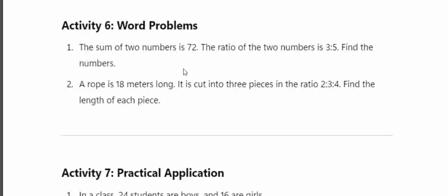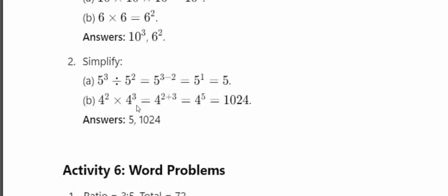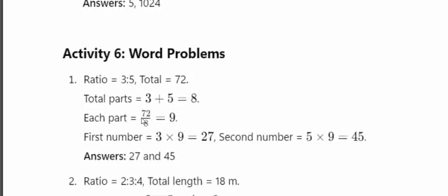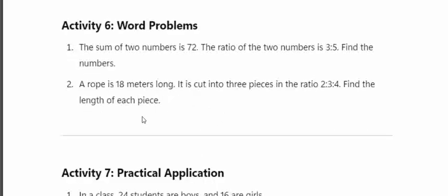The sum of two numbers is 72. The ratio of the two numbers is 3 is to 5. Find the numbers. Total ratio parts: 3 plus 5 equals 8. Each part: 72 divided by 8 equals 9. First number: 3 into 9 equals 27. Second number: 5 into 9 equals 45.